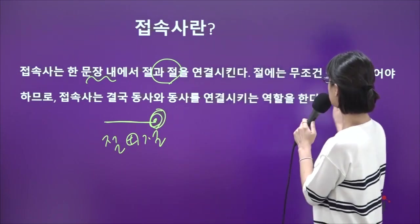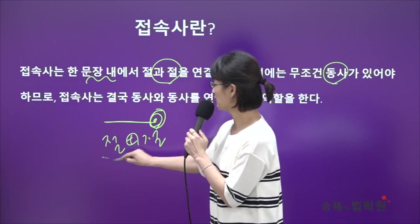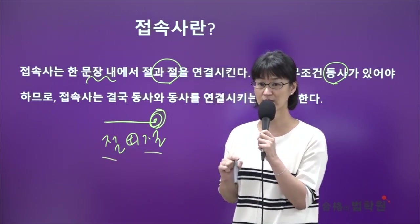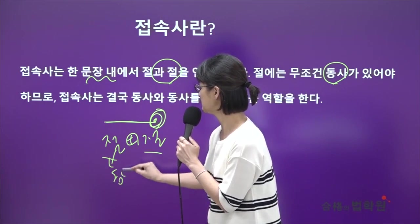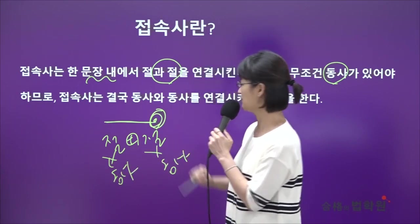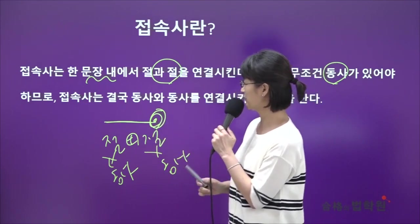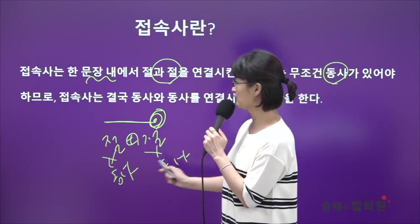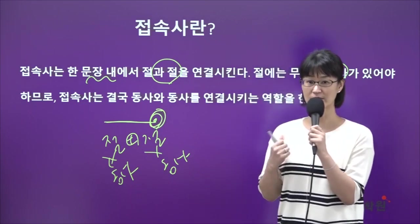절에는 무조건 동사가 있어야 하므로 절이라는 건 무조건 동사를 취하고 있는 형태를 얘기합니다. 절 안에는 항상 동사가 존재하겠죠. 결국 접속사가 절과 절을 연결시킨다는 건 한 문장 안에서 동사와 동사를 연결시킨다는 것과 마찬가지입니다.